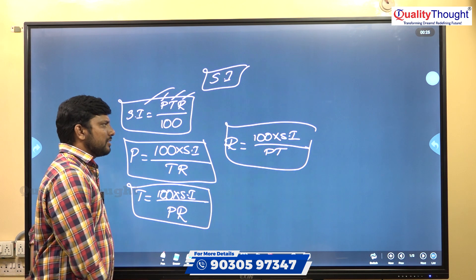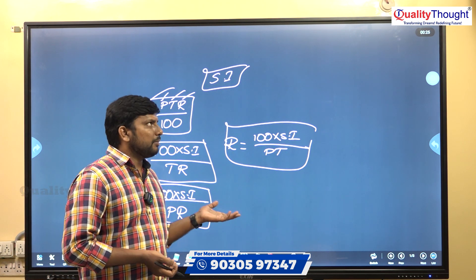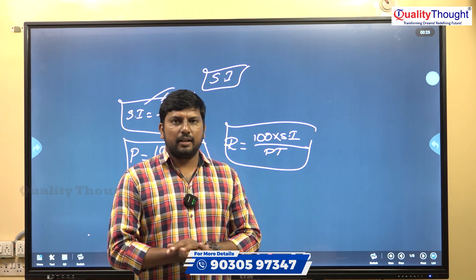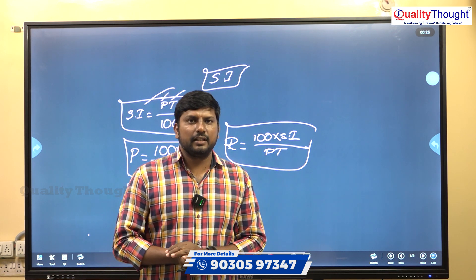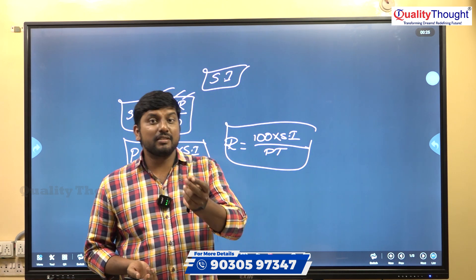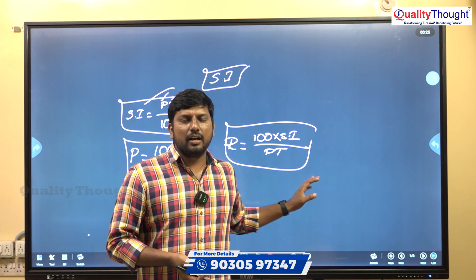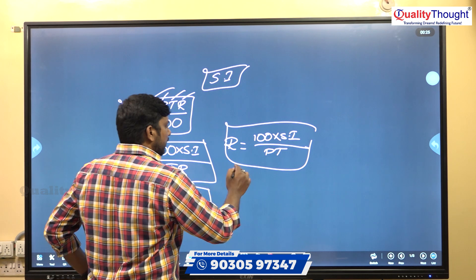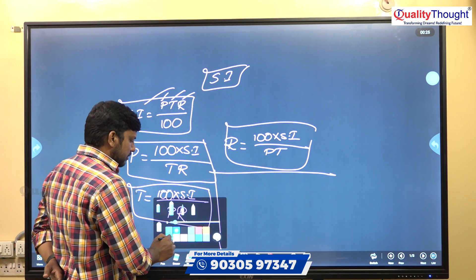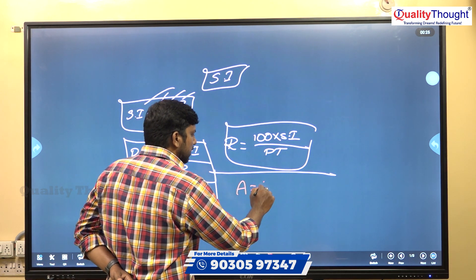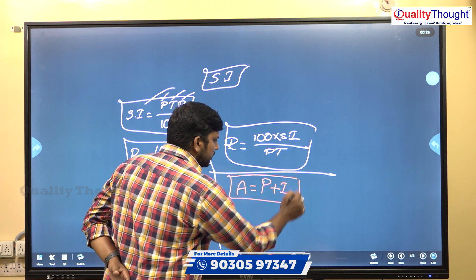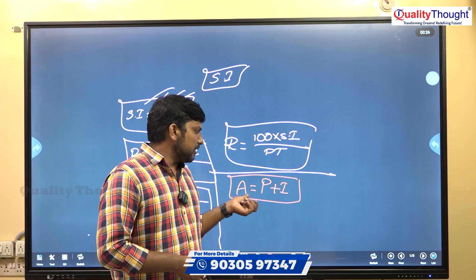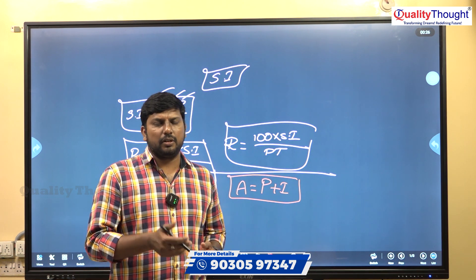So these are the simple interest formulas. Amount is equal to Principle plus Interest. Principle plus interest is known as amount — that is, the capital or investment amount. After some duration at some rate of interest, the total you receive is considered as amount.